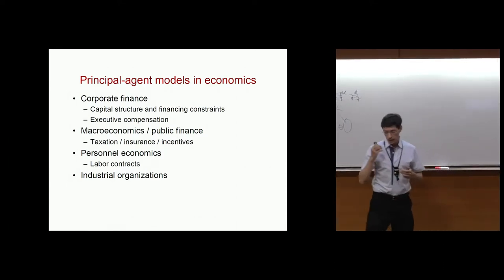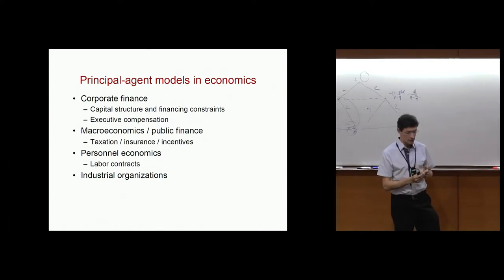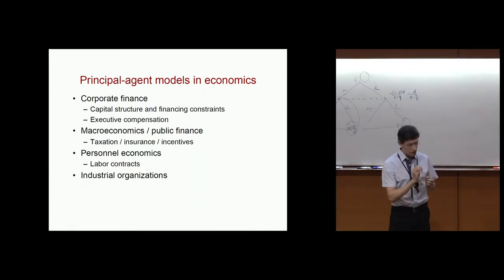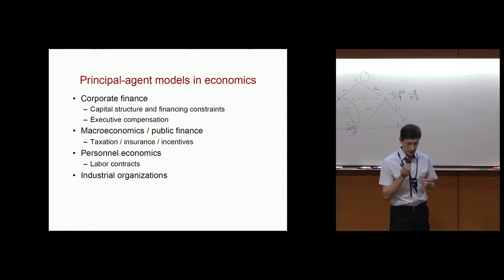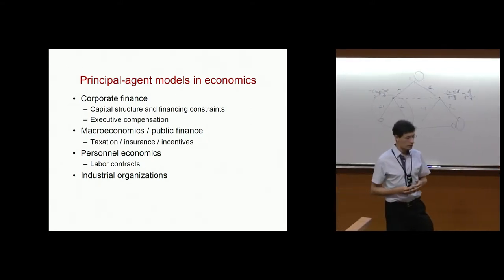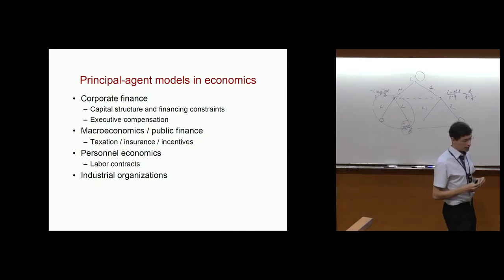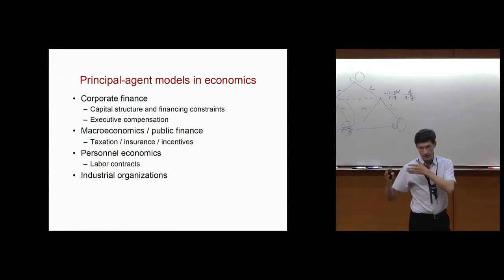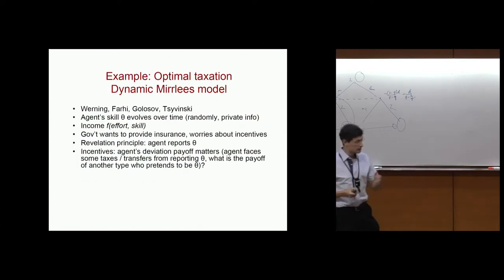One aspect of principal-agent models is that you reward the agent for good outcomes and you punish the agent for bad outcomes. In this talk, I want to discuss another dimension which is a bit more subtle — it basically has to do with dynamic adverse selection. The agent has some private information, and this private information could be something the agent was born with, or it can be generated by the agent's past actions. The question is how does the principal deal with it.